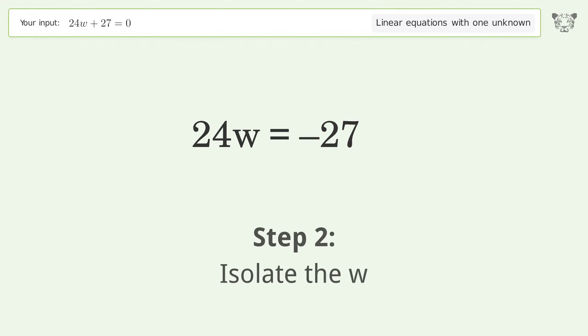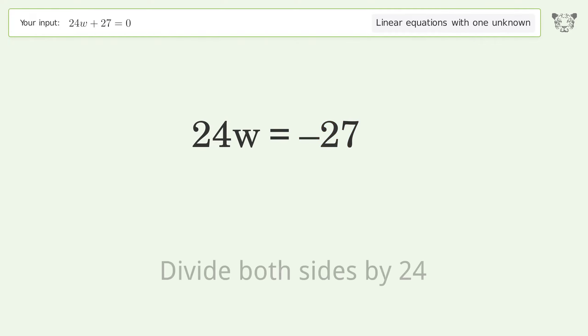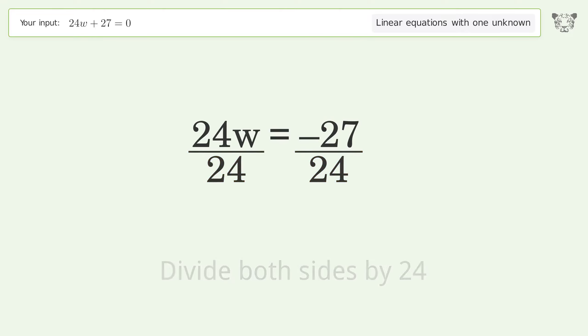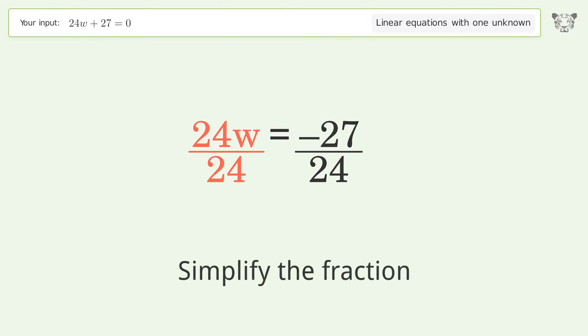Isolate w by dividing both sides by 24, then simplify the fraction.